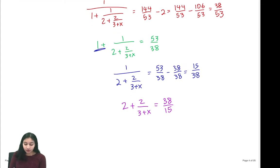Now we subtract this 2 from both sides and we'll see that 2 over 3 plus x equals 38 over 15 minus 2, which is 8 over 15.